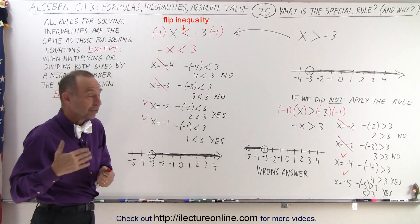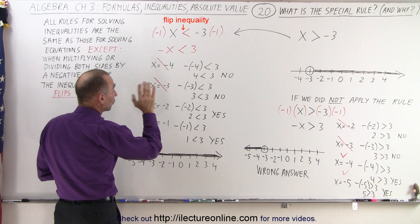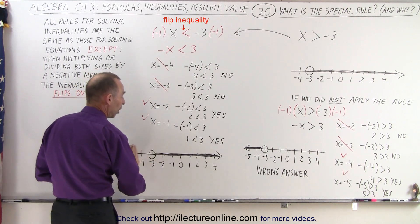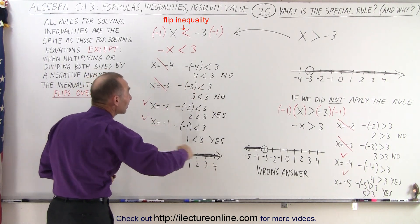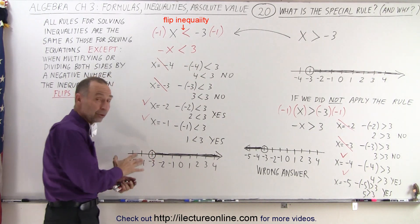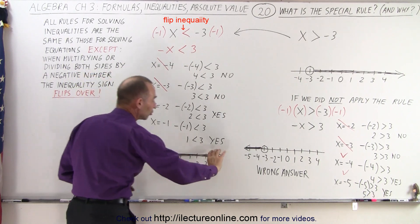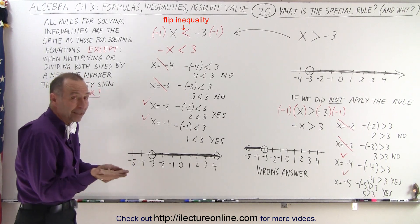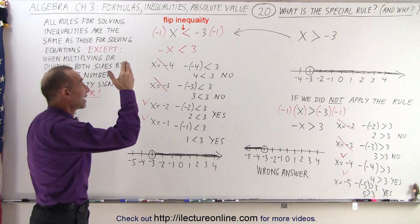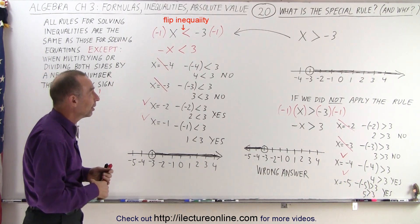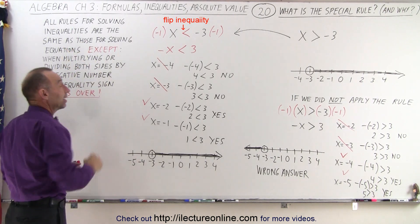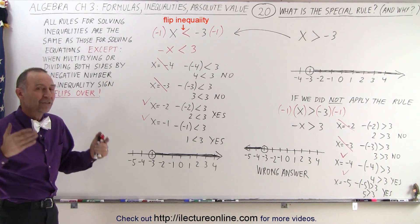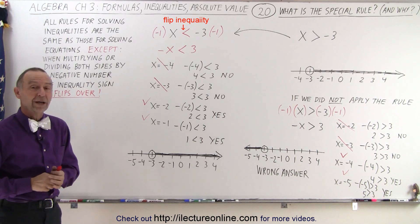So all values for x that are greater than negative 3 — because negative 2 and negative 1 are both greater than negative 3 — will satisfy this inequality, not including the endpoint negative 3. Notice that this solution is exactly the same as our original solution. By multiplying both sides by negative 1 and flipping the inequality sign, we get the exact same result, which confirms that when multiplying or dividing both sides by a negative number, we must flip the inequality sign.